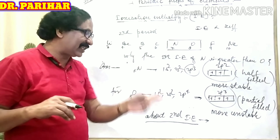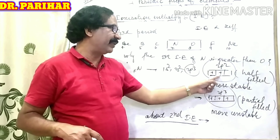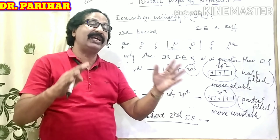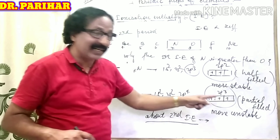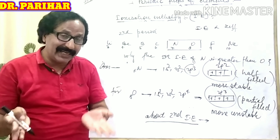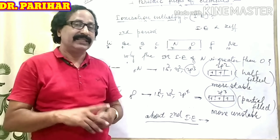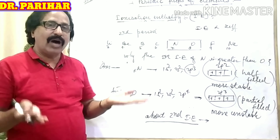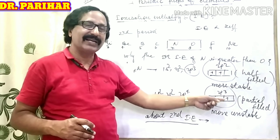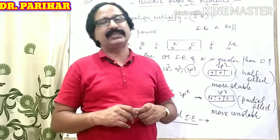After losing one electron from nitrogen via first ionization, nitrogen's outermost p sub-shell becomes partial-filled and unstable. After losing one electron from oxygen via first ionization, oxygen's outermost p sub-shell becomes half-filled and more stable. So after losing one electron, more energy is required to withdraw the next electron from oxygen, meaning the second ionization enthalpy of oxygen is greater than nitrogen. This is the complete explanation of ionization enthalpy or ionization potential. Thank you.